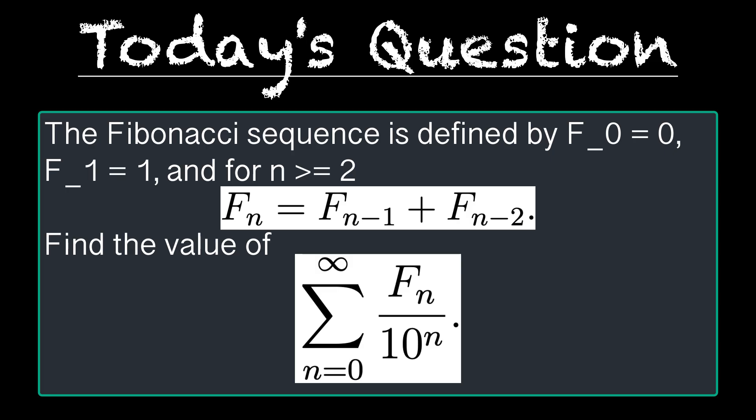The question we're working on today is: the Fibonacci sequence is defined by f₀ equals 0, f₁ equals 1, and for n greater than or equal to 2, fₙ is equal to fₙ₋₁ plus fₙ₋₂. Find the value of the sum from n equals 0 to infinity of fₙ over 10 to the n.